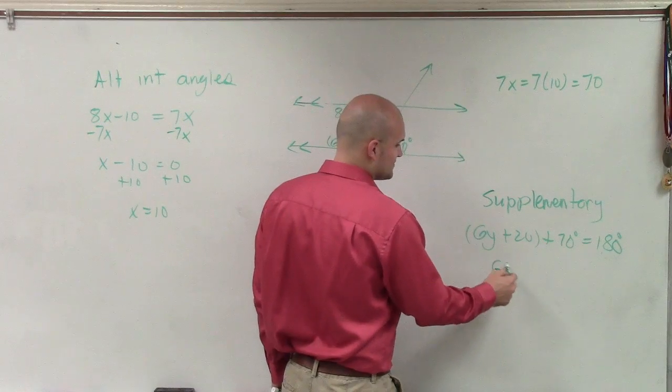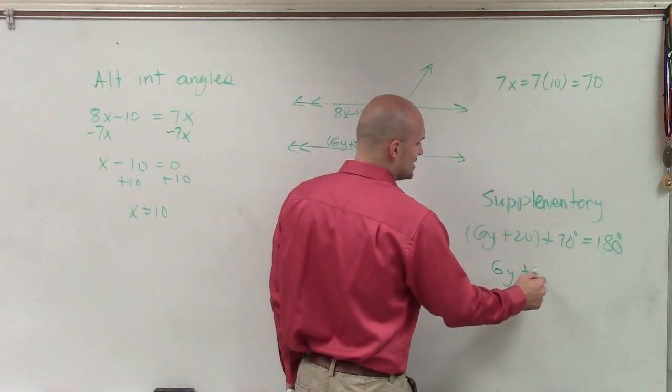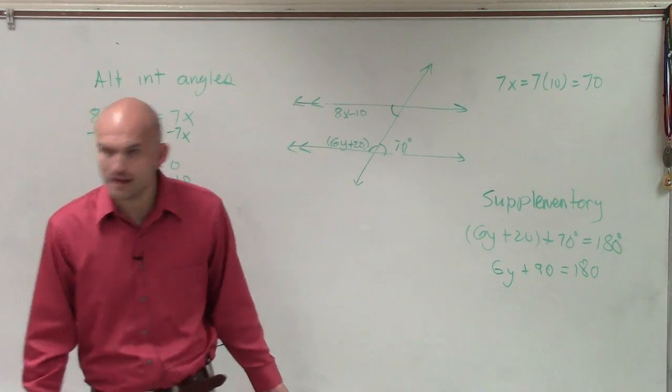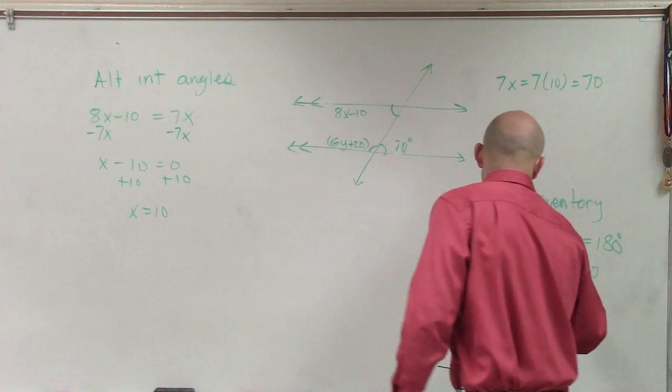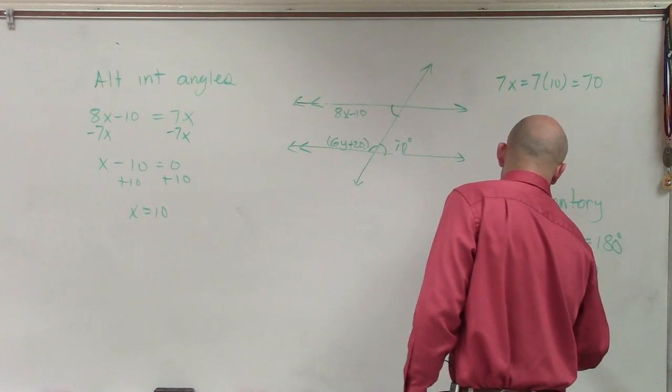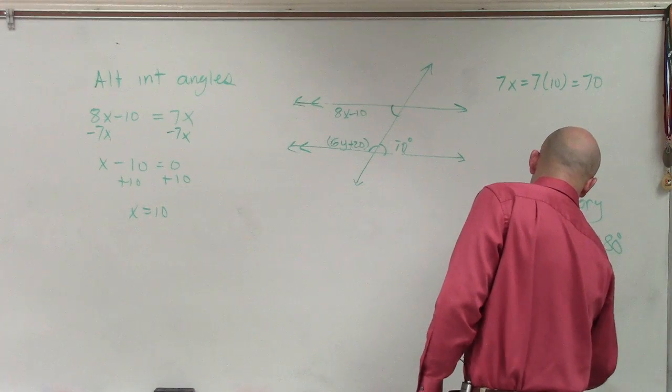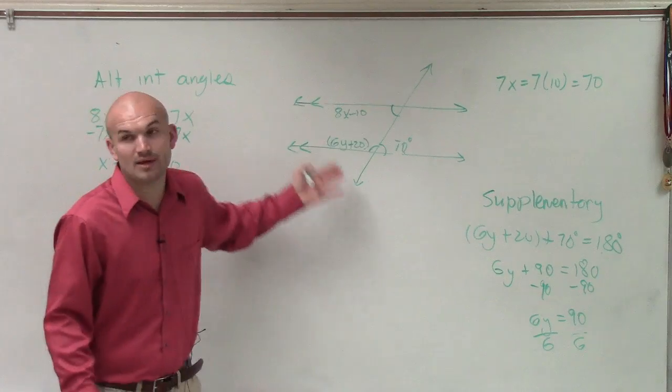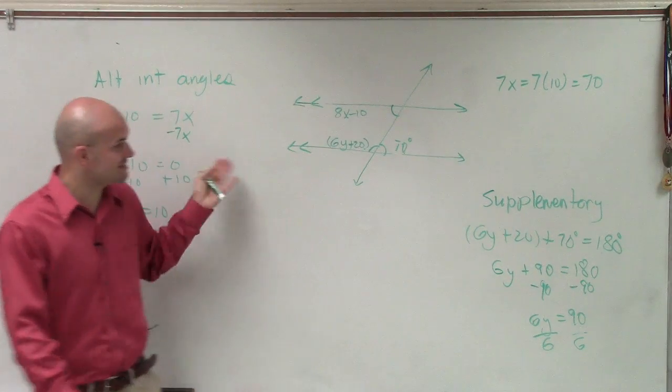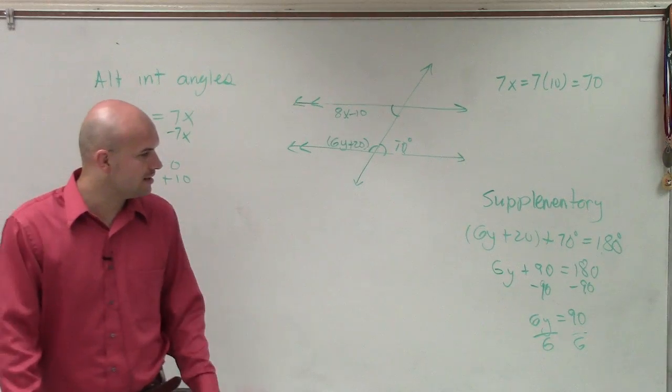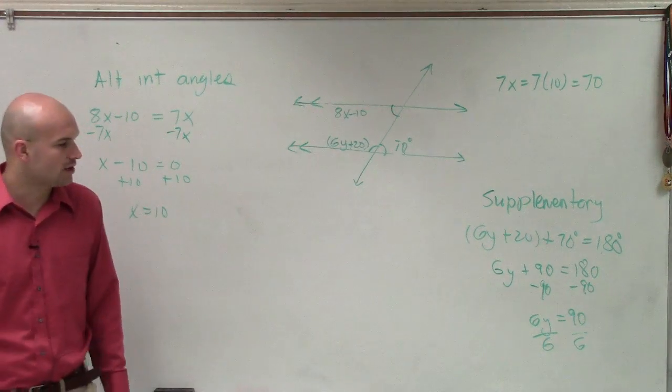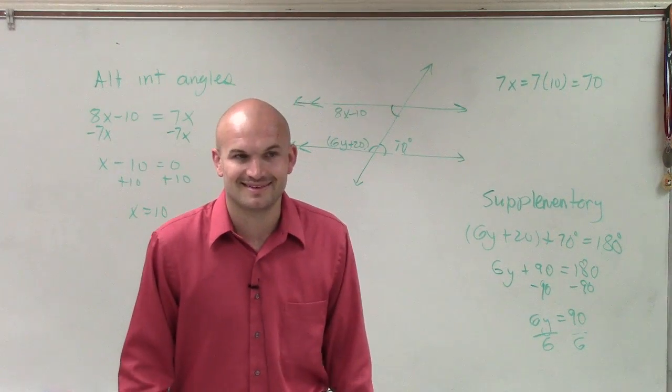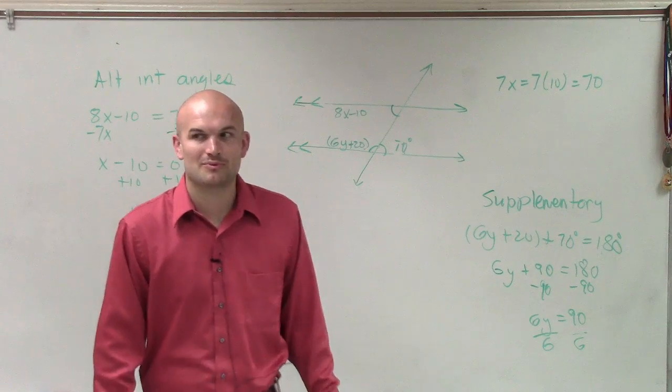So therefore, now I can combine this up. So I have 6y plus 90 equals 180. Now, can I solve for y? Yeah, of course, Zach, right? So I subtract 90 on both sides, and I have 6y equals 90. Then I divide by 6. All right? So by applying alternate interior angles, I was able to determine that x is going to equal to 10, and then by solving for y by using supplementary angles, I can determine y is going to equal 15.